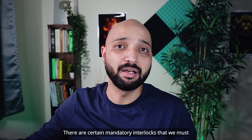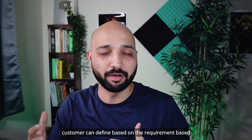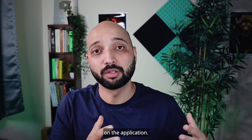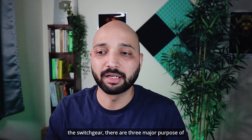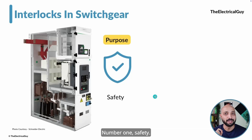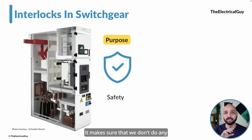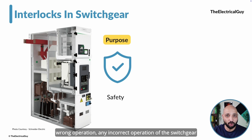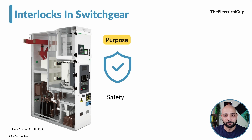There are certain mandatory interlocks that we must provide, and there can be some optional ones that a customer can define based on their requirement and application. If we look at interlocks in switchgear, there are three major purposes. Number one is safety — interlocks make sure that we don't do any wrong or incorrect operation of the switchgear, thereby providing the highest level of safety to persons working near the switchgear.